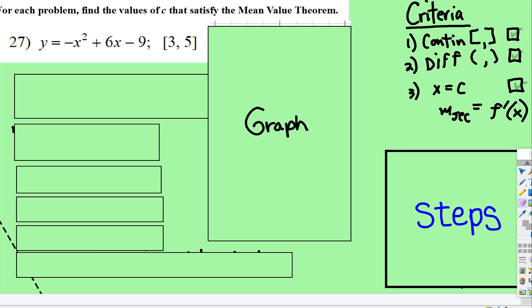Remember the mean value theorem states that for a secant line drawn between two points, there should exist a point between those two on the graph where the secant line will be parallel to the tangent line right here.